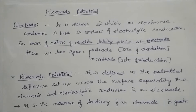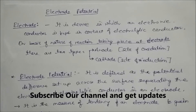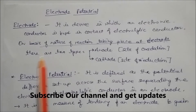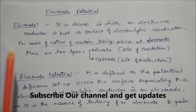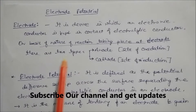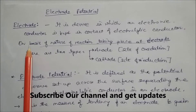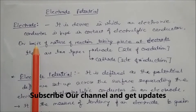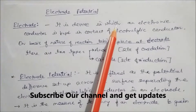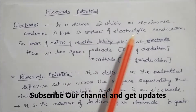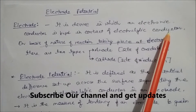Dear students, today we will learn about electrode potential. These two terms — electrode and electrode potential — are very important in the subject of electrochemistry. An electrode is a device in which an electronic conductor is kept in contact with an electrolytic conductor.